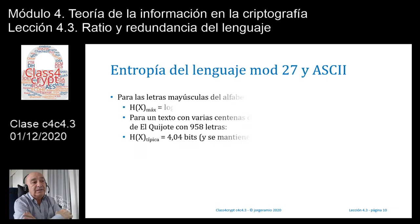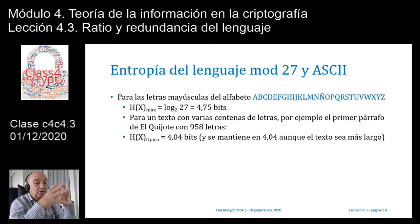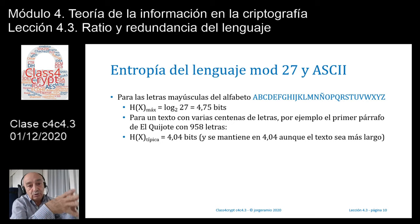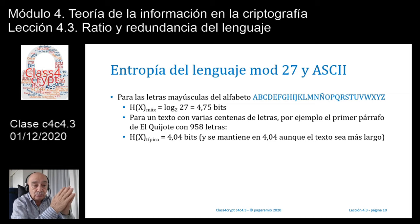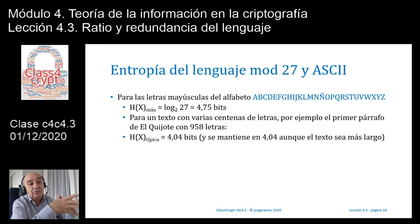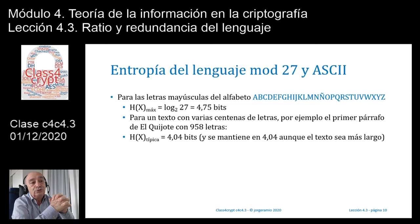Veamos la entropía del lenguaje en módulo 27 y en ASCII. Es decir, vamos a estudiar qué sucede con la entropía y llegaremos a lo que se conoce como redundancia, cuando trabajamos con módulo 27 —solamente las letras mayúsculas del alfabeto en español— o bien cuando trabajamos con todas las letras posibles del código ASCII. El código ASCII tiene 256 caracteres; hay caracteres de control no imprimibles al principio, pero luego hay una gran cantidad de caracteres que podemos generar con el teclado para producir documentos de tipo TXT, no documentos con formato como Word, Excel o PDF.